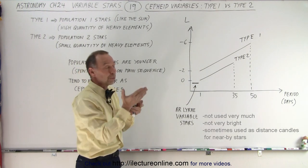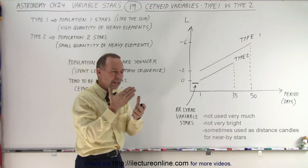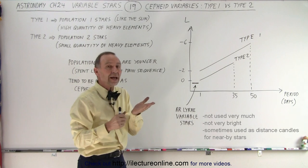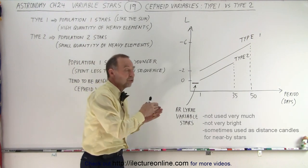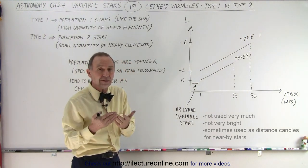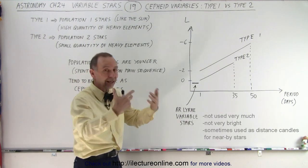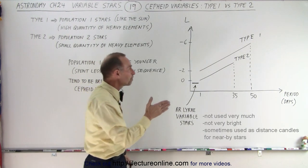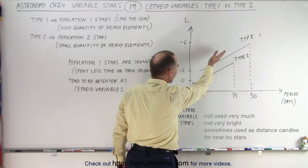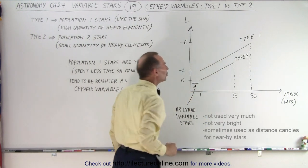Well it turns out that Type 1's do have the emission lines of the heavy elements which are lacking in Type 2. So by the emission lines that we see in the stars when we analyze the light through diffraction gratings we can tell the difference between Type 1 and Type 2 stars.